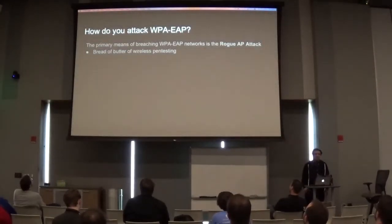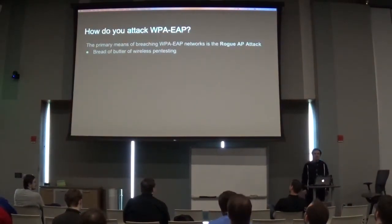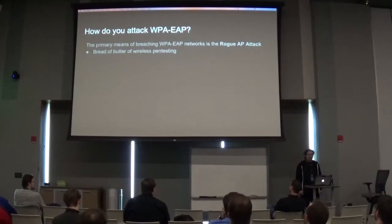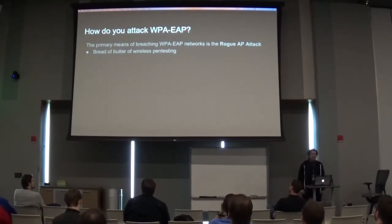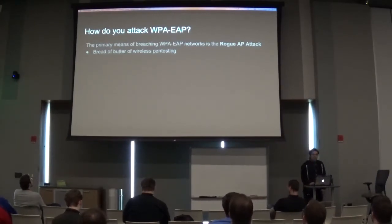So how do you attack WPA-EAP? If you've worked in pen testing for a while, you become accustomed to breaking into PSK networks — you capture the WPA handshake and crack it to get on the network. With WPA-EAP, you can't really do that. You have to use something called a rogue AP attack. Rogue AP attacks are pretty cool — they're kind of the bread and butter of wireless pen testing.